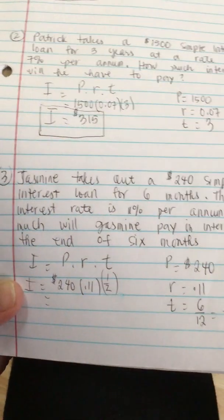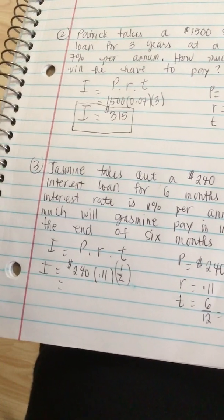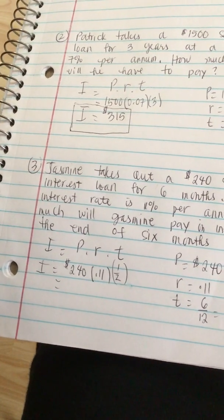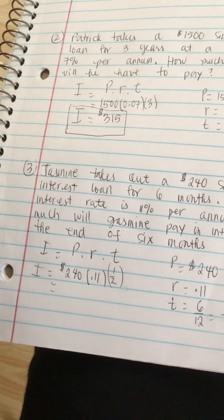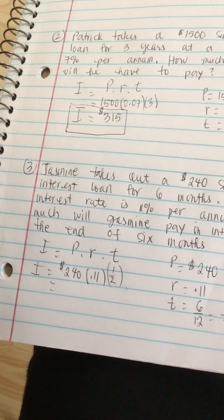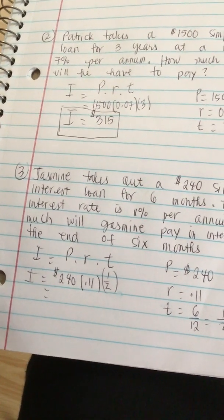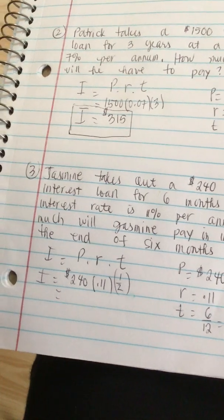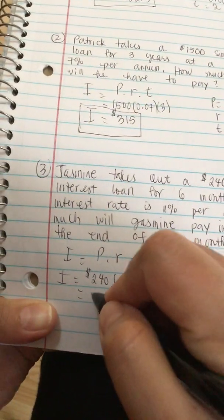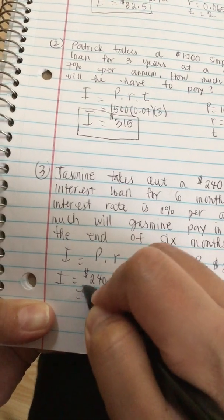And now we punch it into our calculator. So we have 1 half times 0.11 times 240 and it's 13.2 dollars. So I is equal to $13.20.